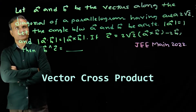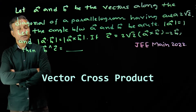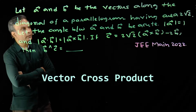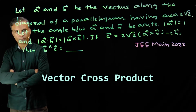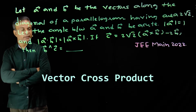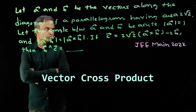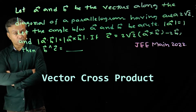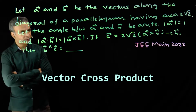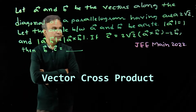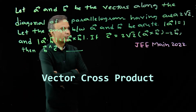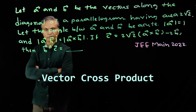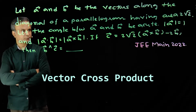Let a and b be the vectors along the diagonal of a parallelogram having area 2√2. Let the angle between a and b be acute. Modulus of a is 1 and modulus of a dot b equals modulus of a cross b. If vector c is 2√2 into (a cross b) minus 2b, then find the angle between vectors b and c.